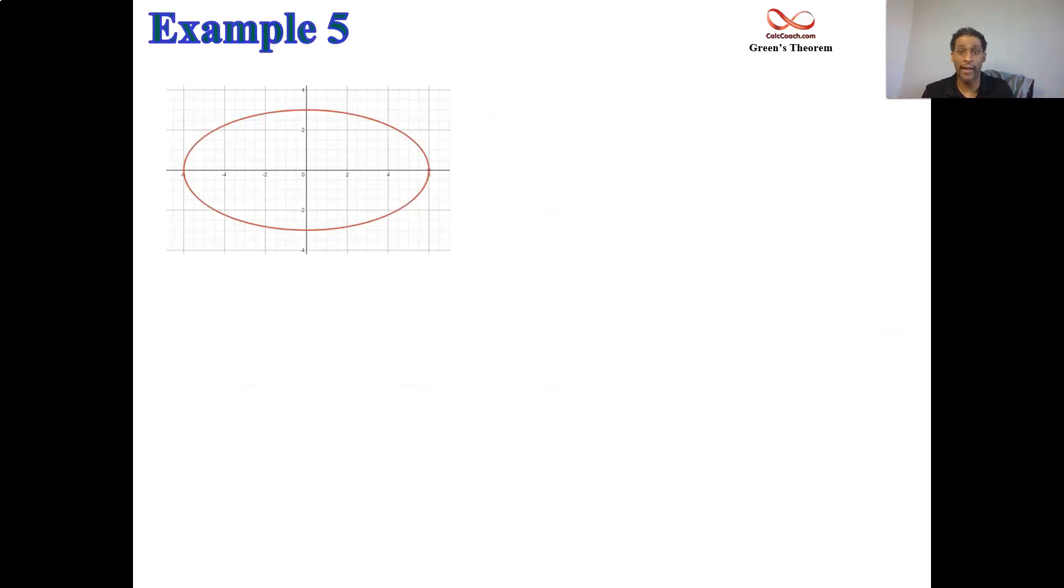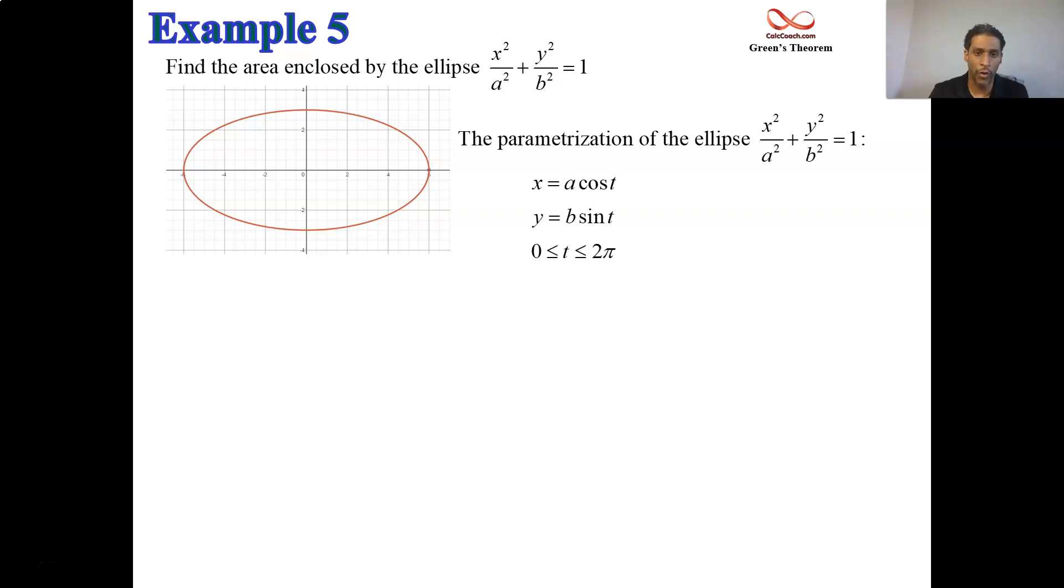Have you ever wondered what the area of an ellipse is? We're going to use Green's Theorem to prove that the area of an ellipse can be found, and it's just based off of the a and the b from the major and the minor axis. Normally, a standard form for an ellipse is x squared over a squared plus y squared over b squared equals 1. That can be parametrized. The way we're going to parametrize that is to have x equal a cosine t and y equal b sine t. That will traverse the ellipse for you. As long as t goes from 0 to 2 pi, you'll be going in a counterclockwise manner. It's positively oriented. It is closed. It is piecewise smooth. And it is simple.